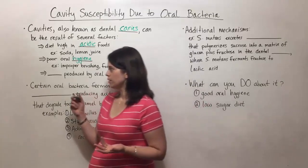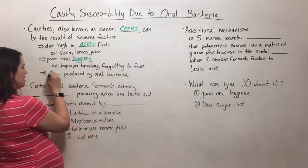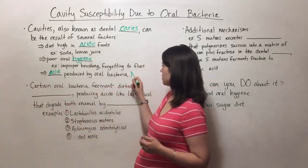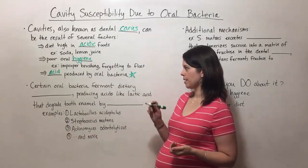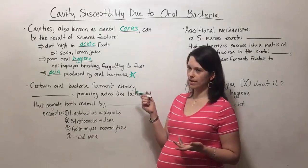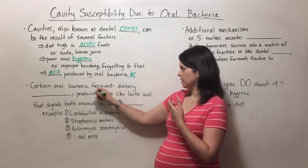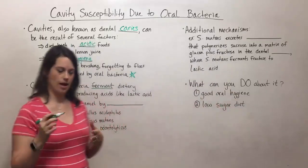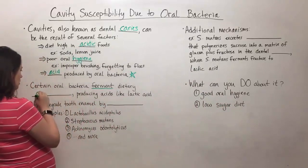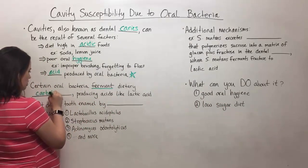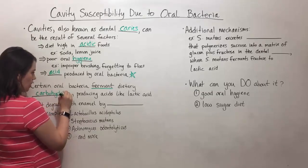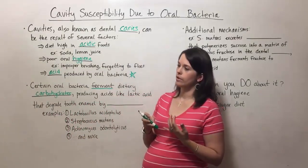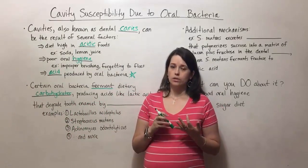The third major factor is acid produced by oral bacteria, and this is our major focus today. Certain oral bacteria can ferment — remember, that's a metabolic process — they can ferment dietary carbohydrates. When we're talking about carbohydrates, we're talking about simple sugars.